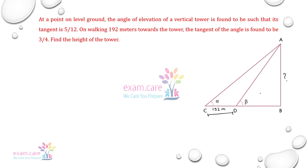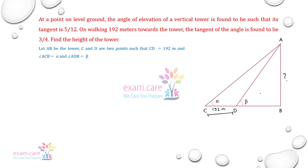आईए जो given है उसे लिख लेते हैं। Let AB be the tower. C and D are two points such that CD is equal to 192 meter. Angle ACB is equal to angle alpha, and angle ADB is equal to beta.